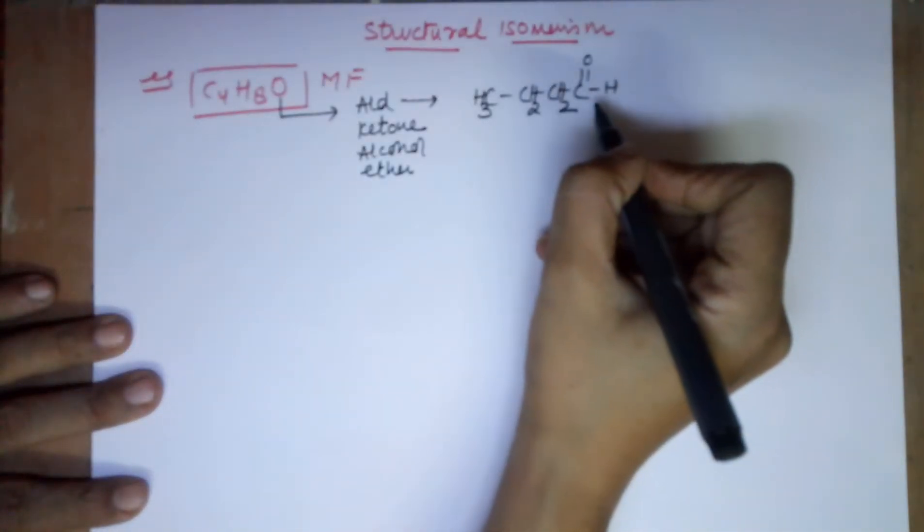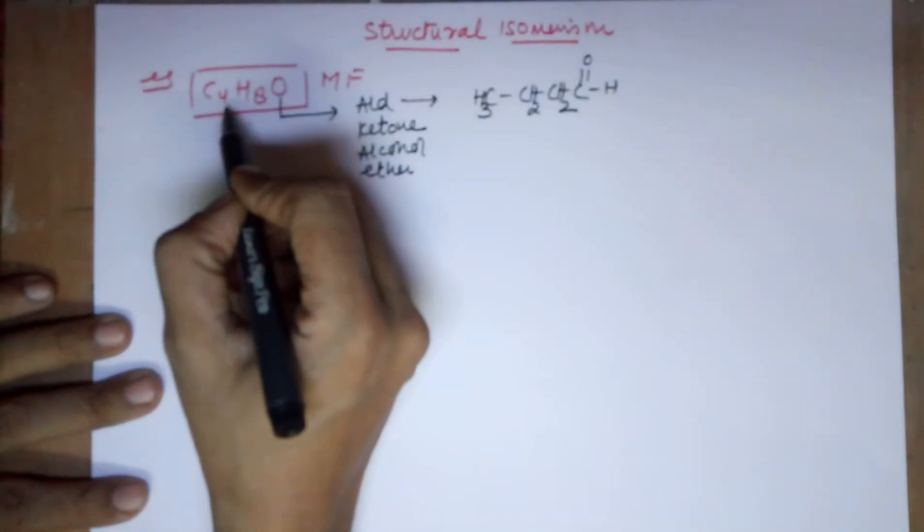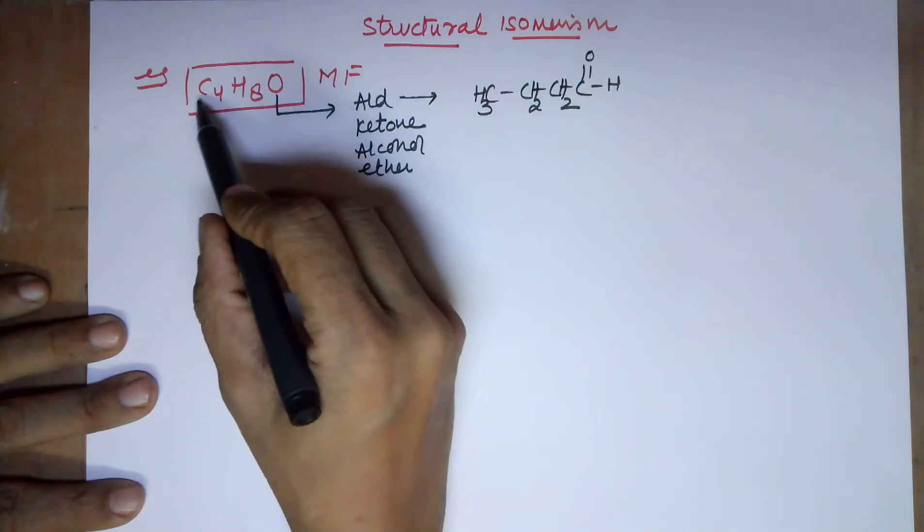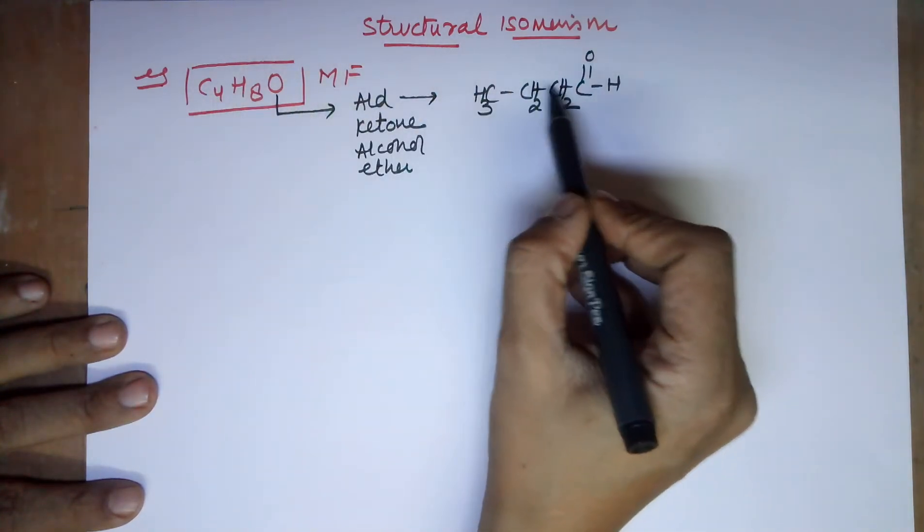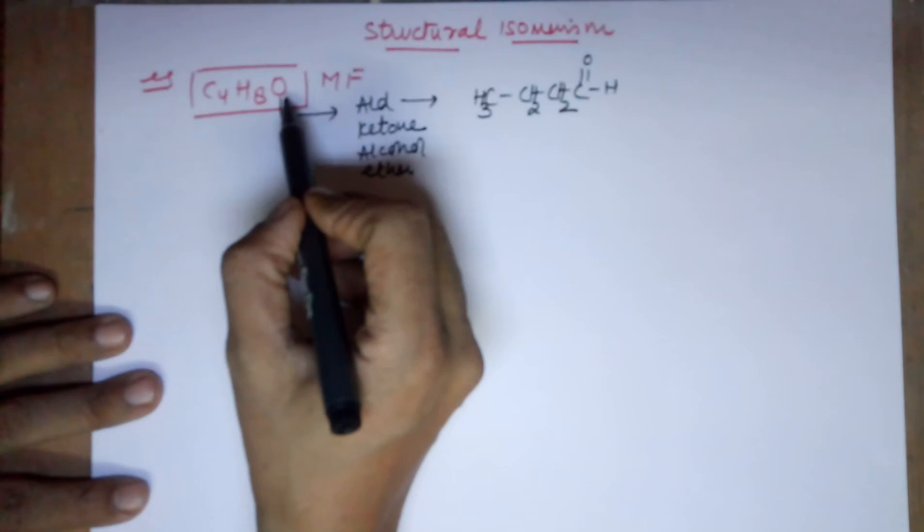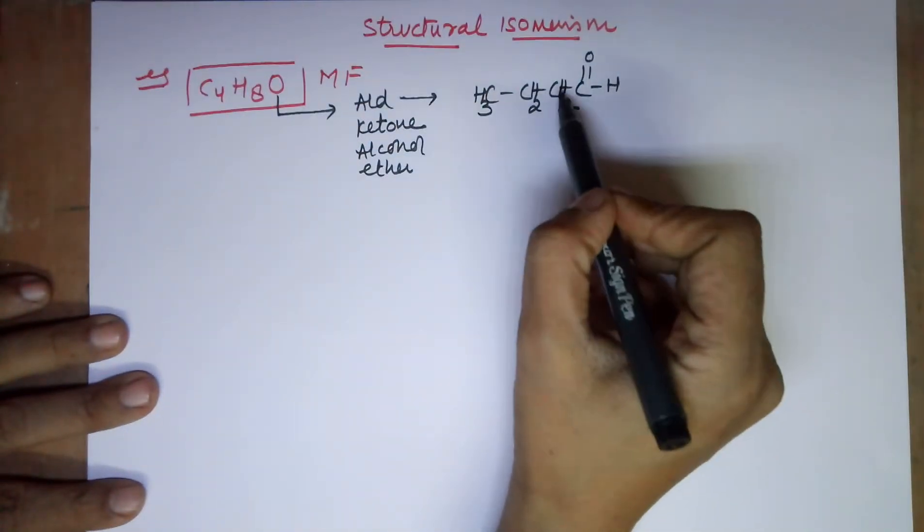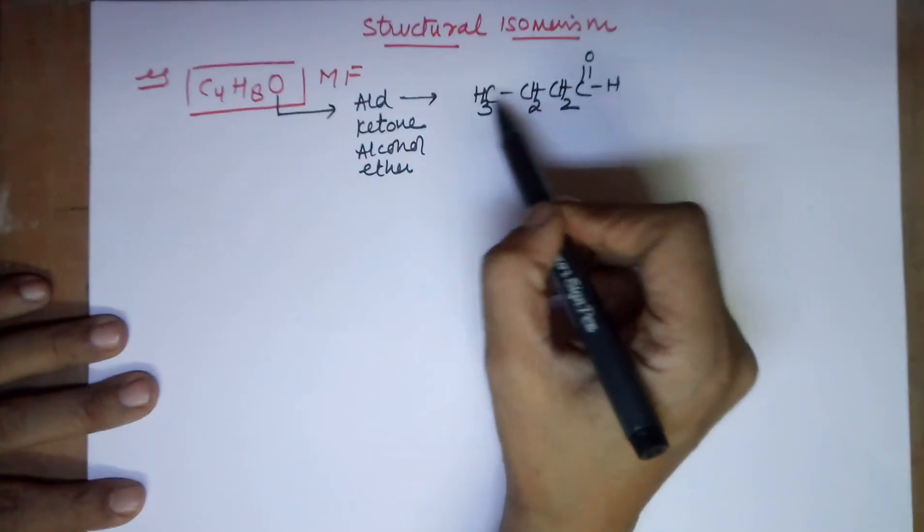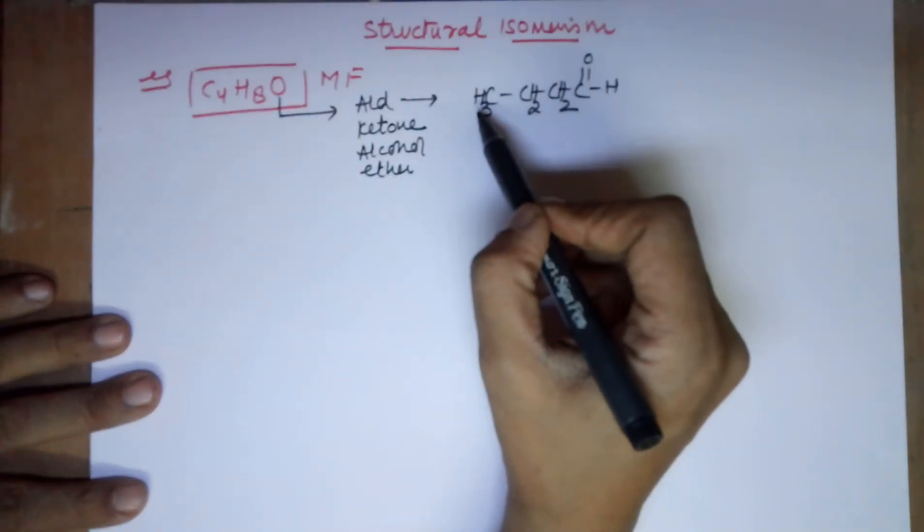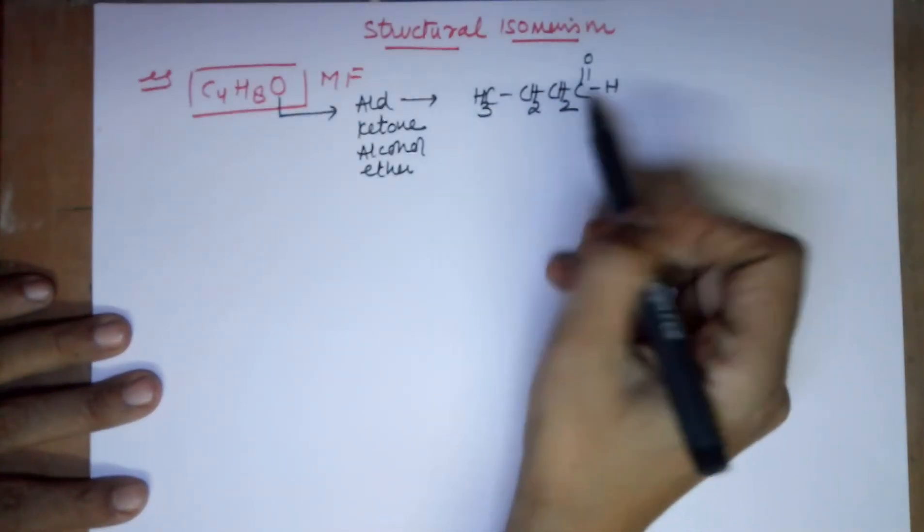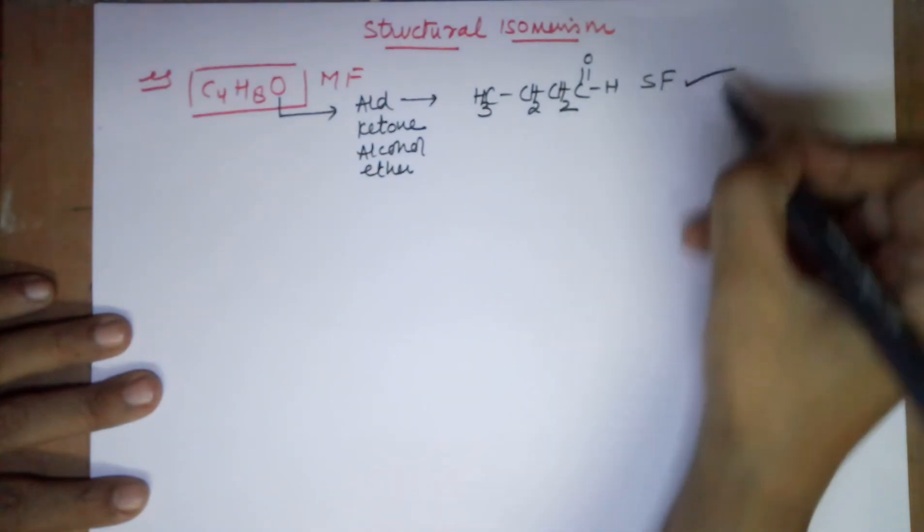Now this is not the right structure for the given molecular formula. Why so? How many carbons did I want? 4. 1, 2, 3, 4. That's fine. How many oxygens? 1. That is also fine. Count the hydrogens. 1, 2, 3, 4, 5, 6, 7, 8. Is that done? That's correct. So the structural formula that I have drawn is fine.